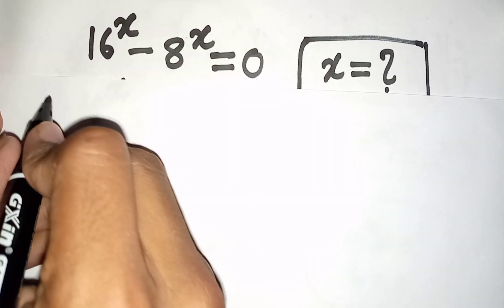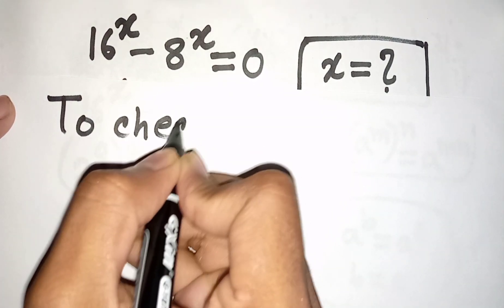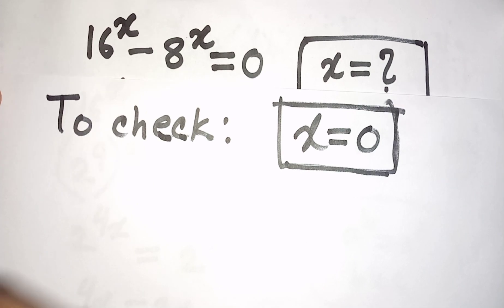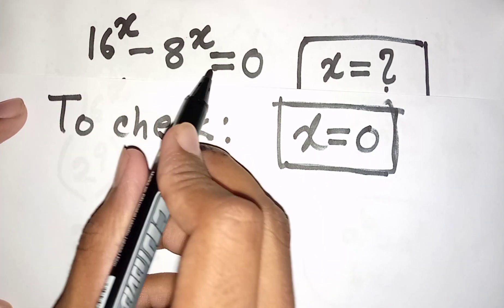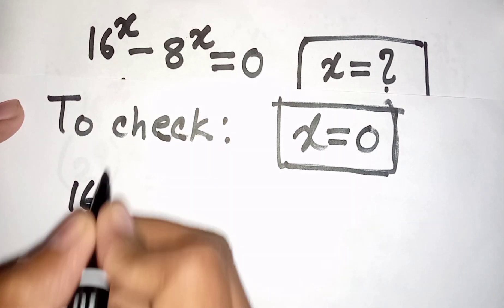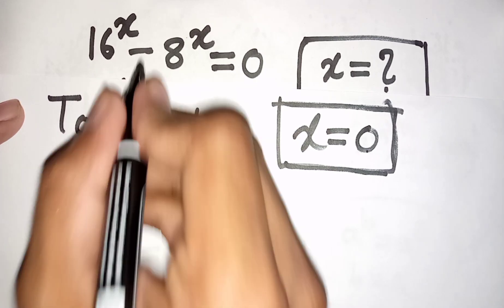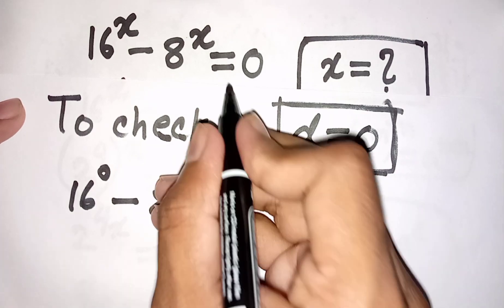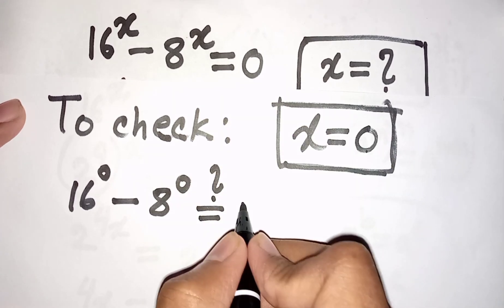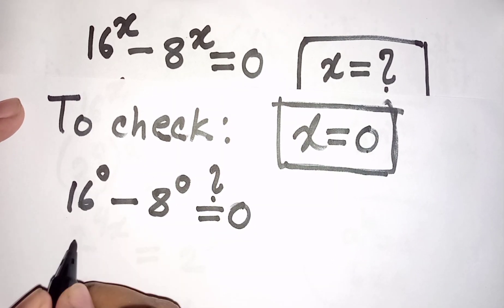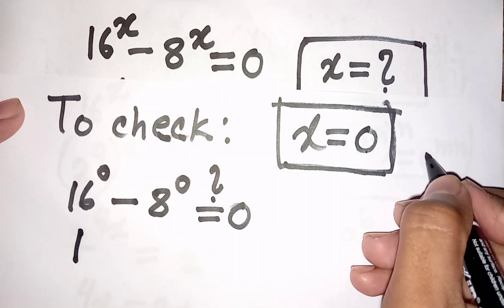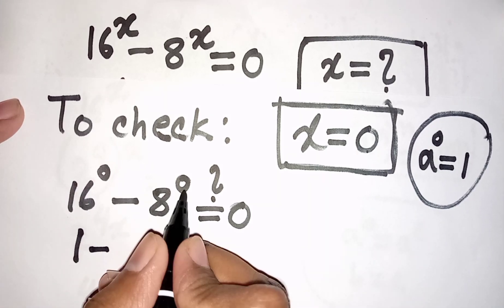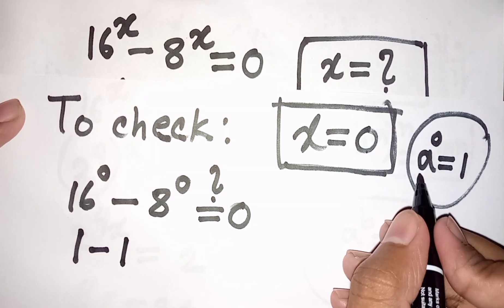Now to check, for x is equal to 0: our equation is 16 power x minus 8 power x is equal to 0. So we can write 16 power 0 minus 8 power 0 is equal to 0, because x is equal to 0. Now 16 power 0 — according to the formula a power 0 is equal to 1 — so 16 power 0 is 1, and 8 power 0 is also 1.